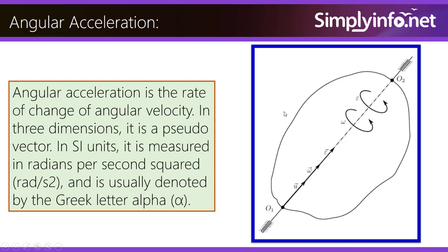In SI units, it is measured in radians per second squared and is usually denoted by the Greek letter alpha.